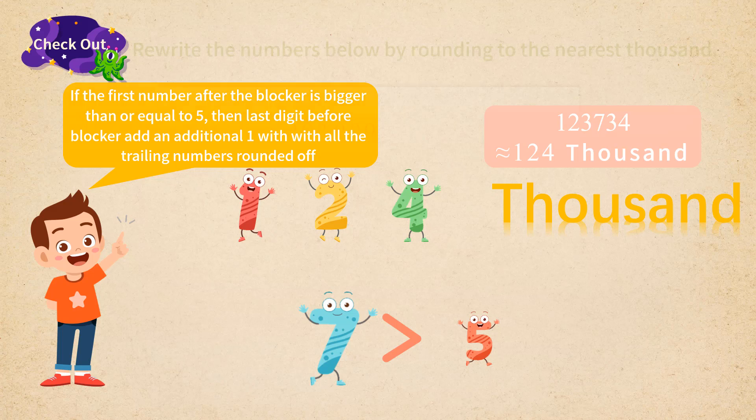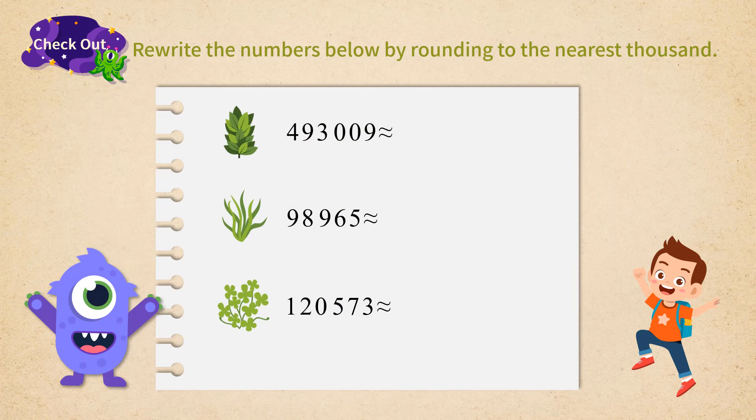Let's go back to the three plants on Lumos' home planet and rewrite these numbers as numbers in thousands. Let's start with the first number. Since the number is rewritten as a number in thousands, it is broken off at the thousand digit. The number 0 at the hundred place is less than 5, so all the trailing numbers are rounded off. So 493,009 is approximately equal to 493,000.